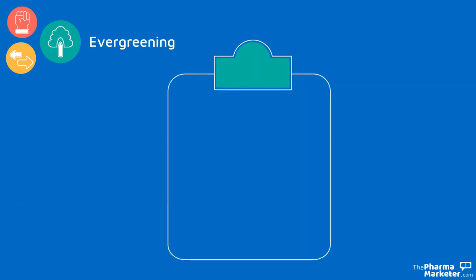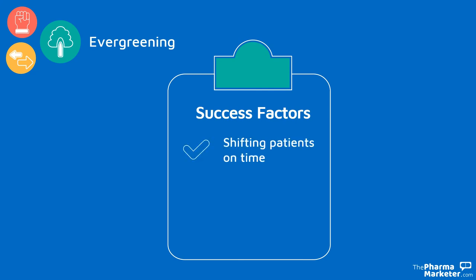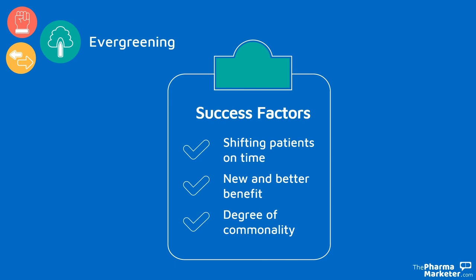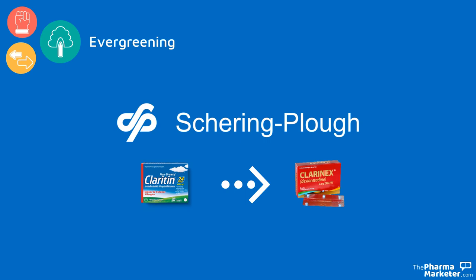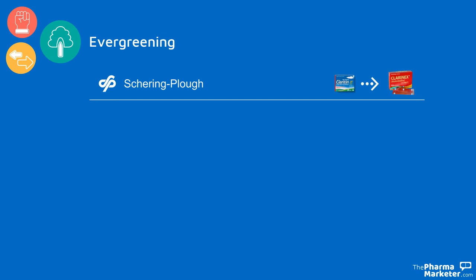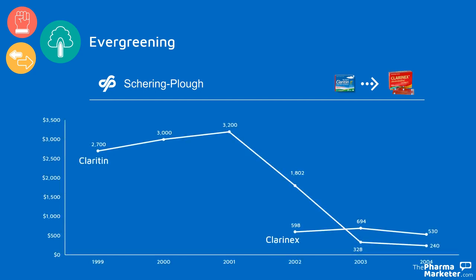In order to implement the evergreening strategy successfully, the company should shift patients to use the new drug before the launch of the generic version of the first-generation product. The next-generation drug must offer a new and better benefit than the current drug, and a certain degree of commonality with the popular and trusted original brand is also important. AstraZeneca made Nexium purple and very similar looking to the original Prilosec. Schering-Plough, by contrast, failed to implement the evergreening strategy properly. Claritin achieved very good sales figures, and the company planned to replace it with next-generation Claritinx. However, delays in US FDA approval for Claritinx enabled generics to enter the market before Claritin patients could be switched, and as a result Claritinx failed to reach blockbuster status. Sales of Claritin dropped dramatically from $3 billion to only $300 million within a short time.